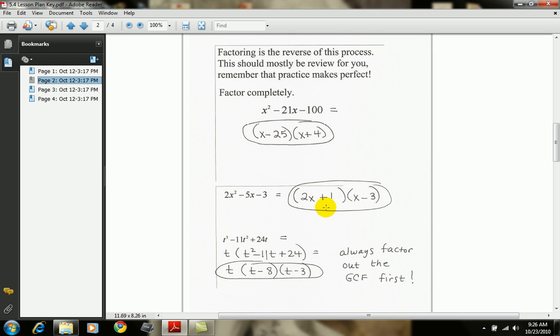And just to make sure this works, let's do chin and grin. 1 times x is 1x. Let's do the grin, which is the outer one. 2x times negative 3 is negative 6x. So the 1x and the negative 6x gave me the negative 5x.